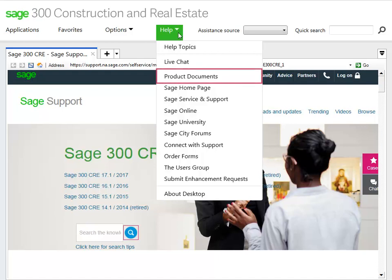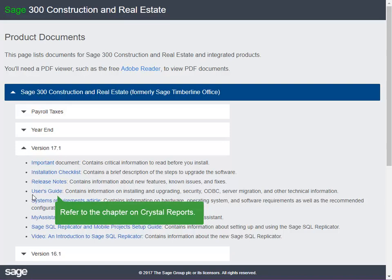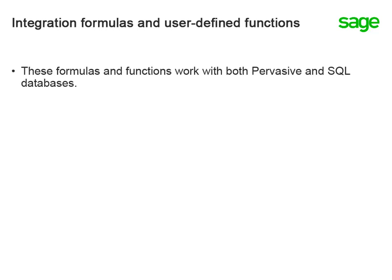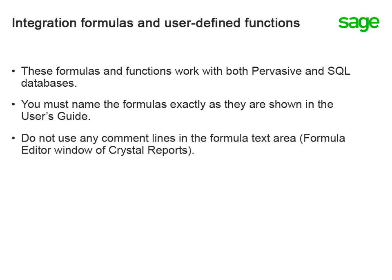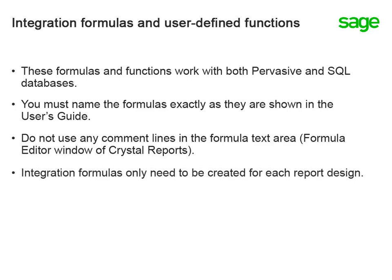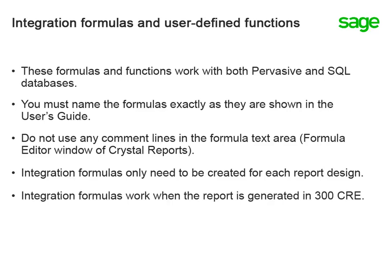For a complete list of the integration formulas, refer to the User's Guide, which you can get to from the Product Documents web page. Expand the software version and locate the User's Guide — there's a chapter devoted entirely to writing reports using Crystal, including integration formulas and user-defined functions. These work with both Pervasive and SQL Server databases. When you create a formula, the name must match what's shown in the User's Guide, follow the syntax outlined in the document, and don't use any comment lines in the formula text area of the formula editor window. Integration formulas only need to be created once for each report — they don't have to be placed on the report itself — and you'll only see the results when you run the report in 300 CRE.